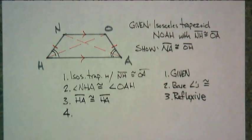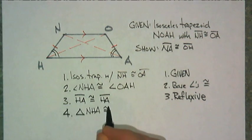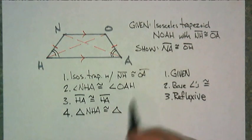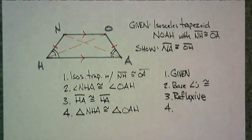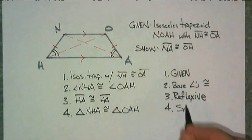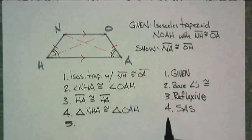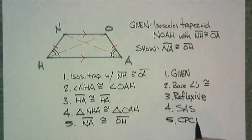And then I can say the two triangles are congruent. So triangle NHA must be congruent to triangle OAH. And our reason for this, look back up here. We have a side, an angle, a side. That's our order. Side, angle, side. Now, lastly, does that help us with this? Yes, it does. NA in this triangle must be congruent to OH in this triangle. CPCTC.